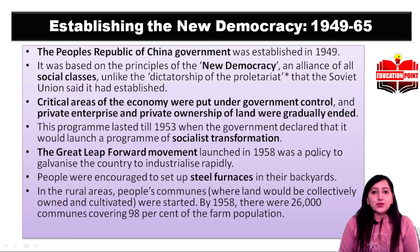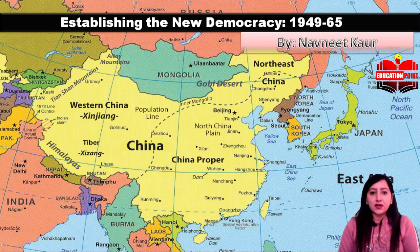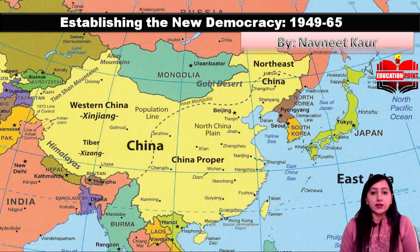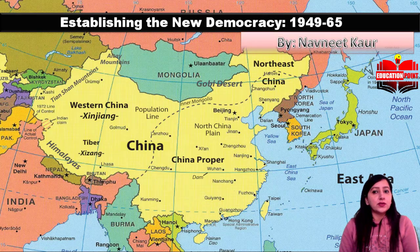Hi everyone, welcome to Education Points. We are covering Class 11 NCERT, and we started the 11th chapter, which is the last chapter of this particular book. We were talking about Japan and China. We covered each aspect about Japan — Japan is a developed country — and in our previous video, we had started covering China.